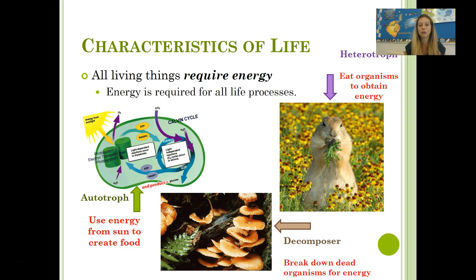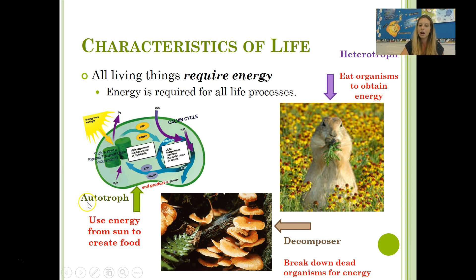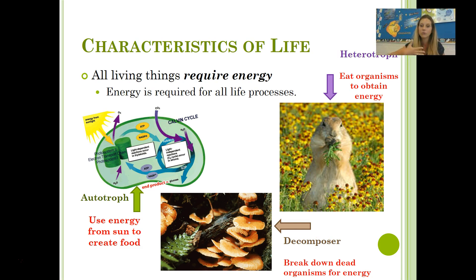The next characteristic of life is that all living things require energy. Energy is needed for all life processes, but organisms are capable of getting energy in different ways. Organisms that are autotrophic are capable of using energy from the sun to create their own food — plants utilize the process of photosynthesis and make their food by using energy from the sun. Heterotrophs have to eat other organisms — plants or animals — in order to obtain their energy. Decomposers are capable of breaking down dead and decaying organisms using enzymes to absorb nutrients and get energy that way.